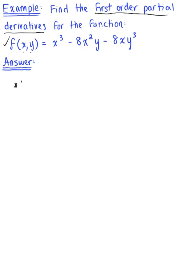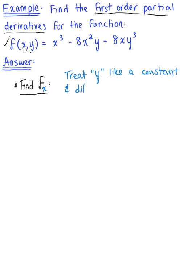Let's start by finding the partial derivative of this function with respect to x. It is crucial to keep in mind what we are differentiating with respect to — here, that's x. So we are going to treat the variable y like a constant, as if it's a real number, and differentiate as if we have a single variable function.